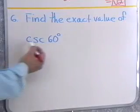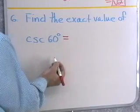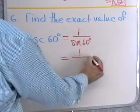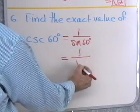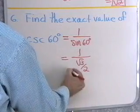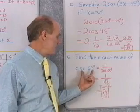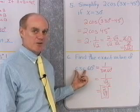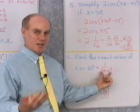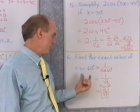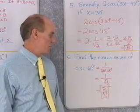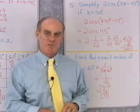Let's find the exact value of cosecant of 60 degrees. Using the reciprocal identity, cosecant of 60 equals 1 over sine of 60. Sine of 60 is square root 3 over 2, so cosecant of 60 is 1 divided by (square root 3 over 2), which equals 2 over square root 3. I won't memorize exact values for cosecant, secant, and cotangent separately — instead I'll use the reciprocal identities to express them in terms of sine, cosine, and tangent of the special angles.